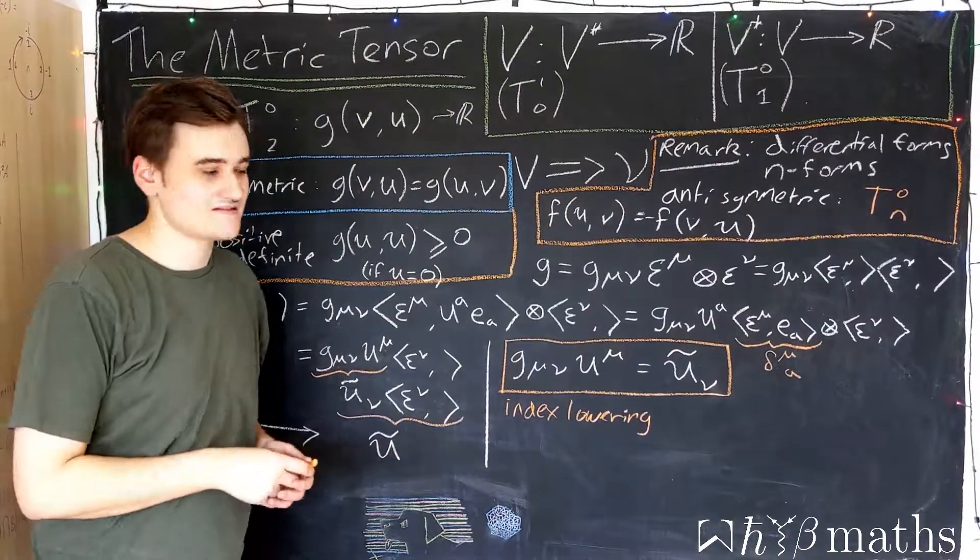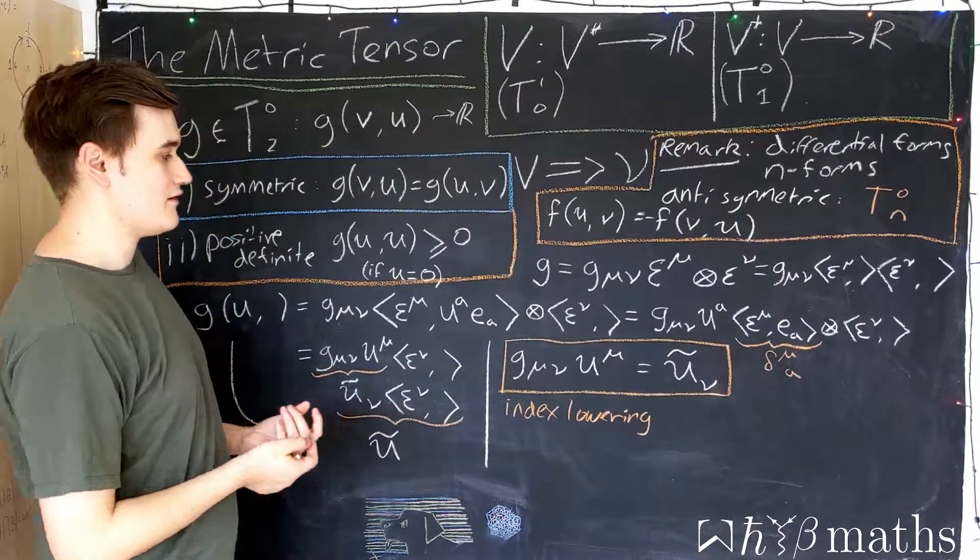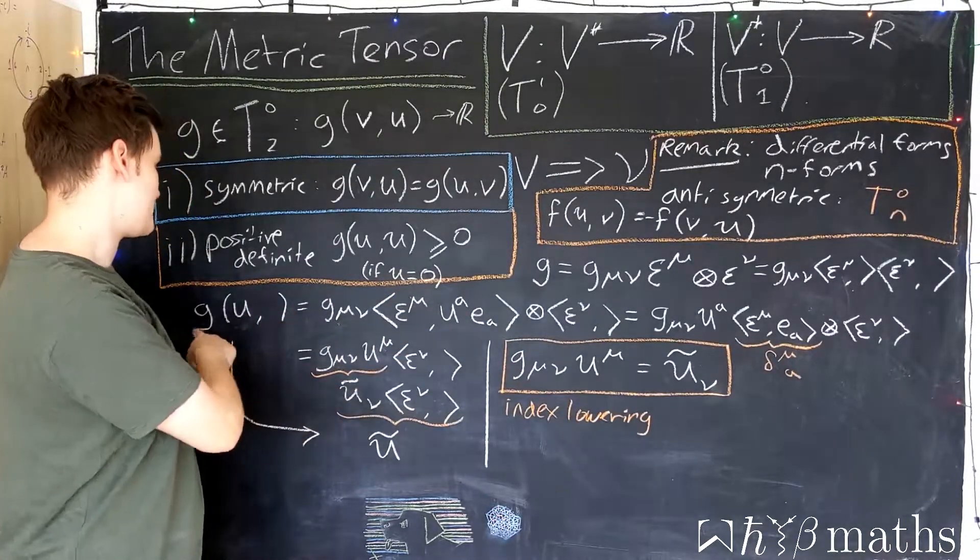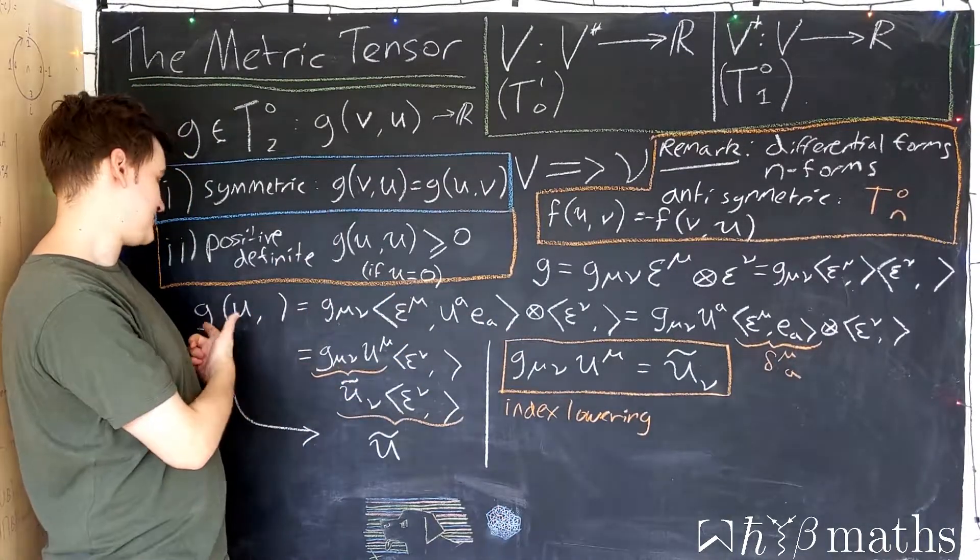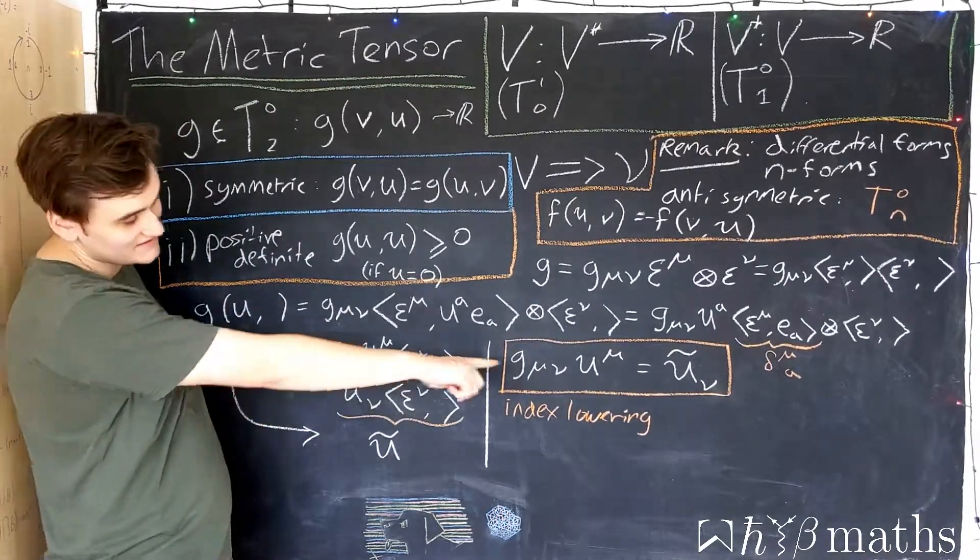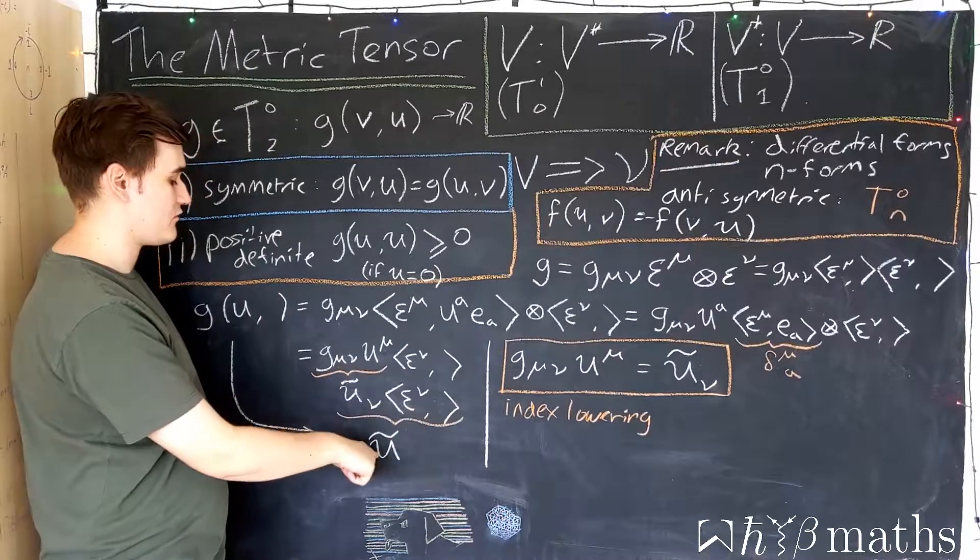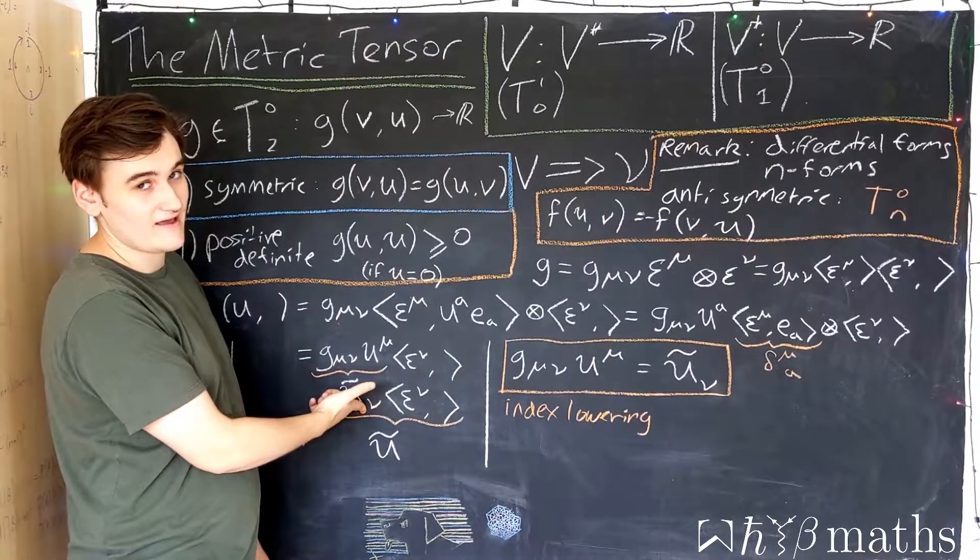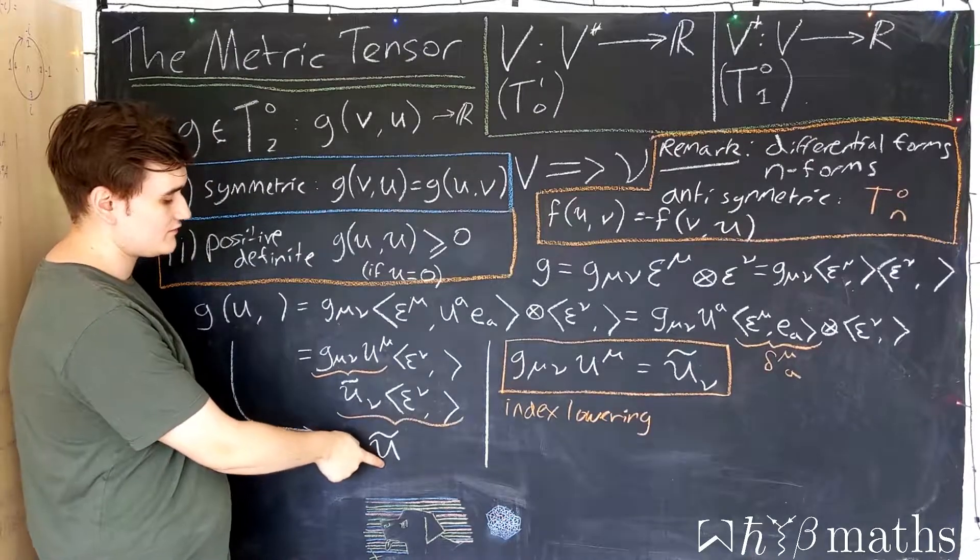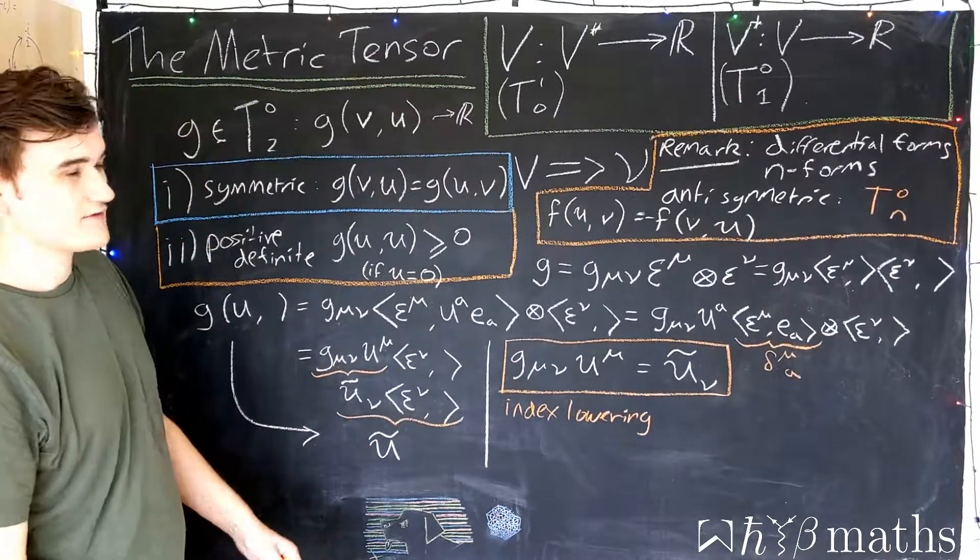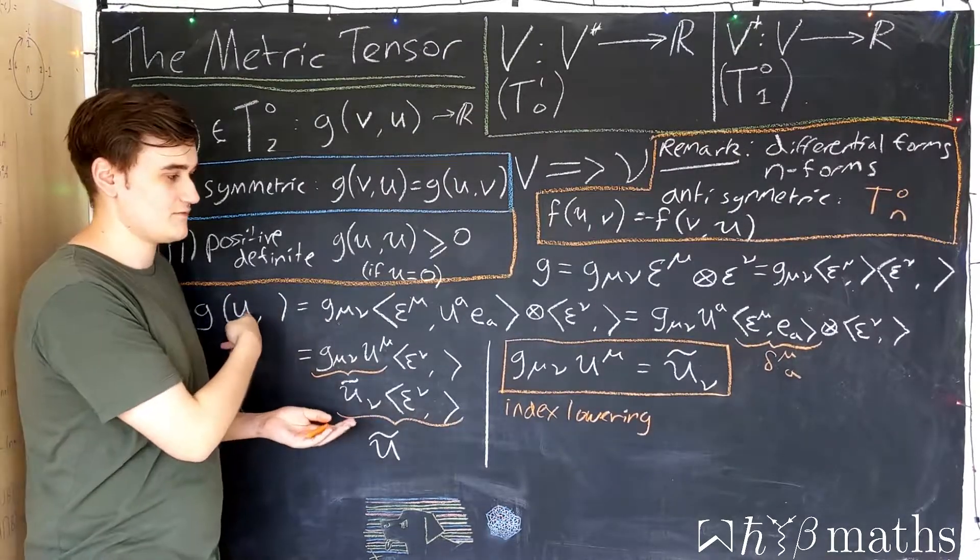Now there's a slight subtlety I should mention here. This would in fact be true of any (0,2) tensor that you could write down. Any (0,2) tensor - we just now imagine g is some other tensor t - I can do this exact same construction and get all the way through and find the result just being an object with one lower index. However, this dual vector we would then produce would in general not be effectively the dual vector associated to the vector that we started with.